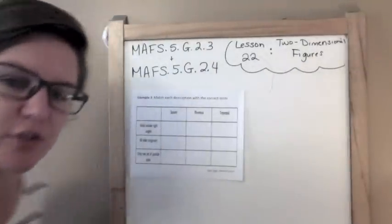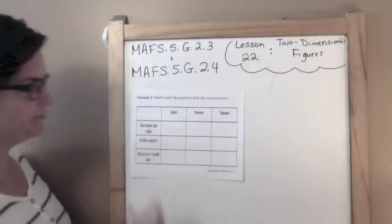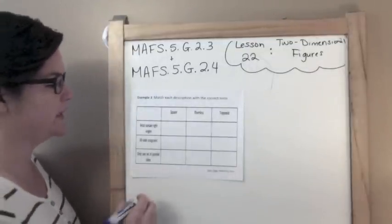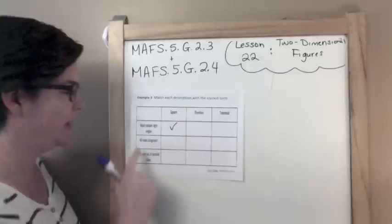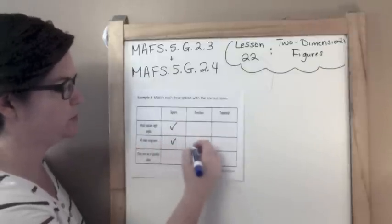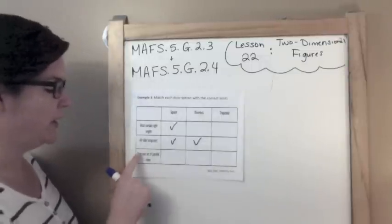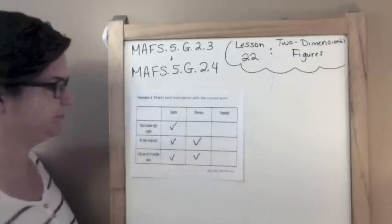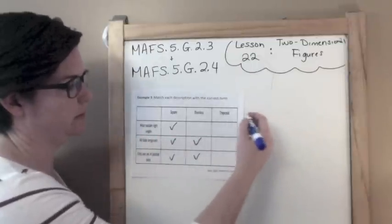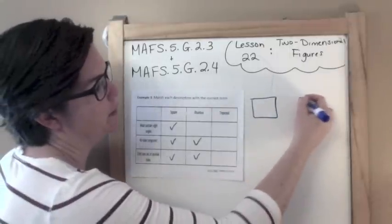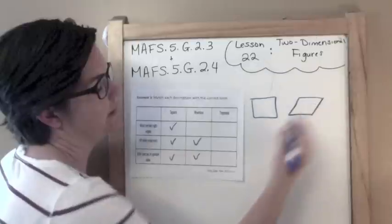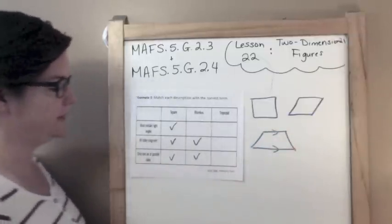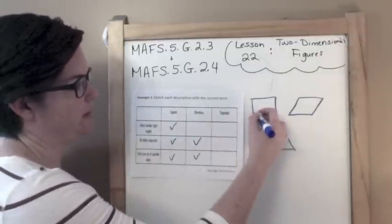Example three. Match each description with the correct term. We have a square, rhombus, trapezoid. Must contain right angles—which ones must contain right angles? That would be a square. How about all sides congruent? That would be a square and a rhombus both have all sides congruent. Only one set of parallel sides? So this would be my square. A rhombus usually looks something kind of like that, and then our trapezoid usually looks something kind of like this, with one set of parallel lines. So you can see here, the square contains the right angle, not these guys.